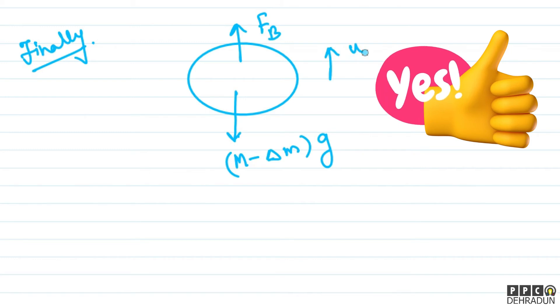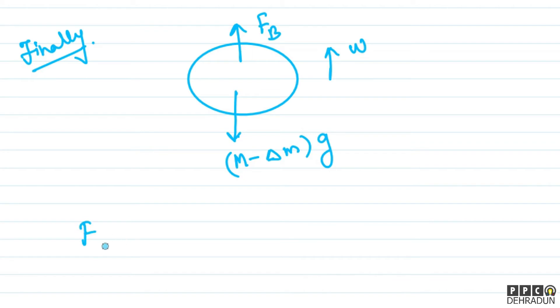But now what we want is that the acceleration, instead of downward, should become upward. So this time what will we write? Net force equals mass into acceleration. So Fb minus M minus delta M into G, this will be equal to M minus delta M into acceleration, which is W.